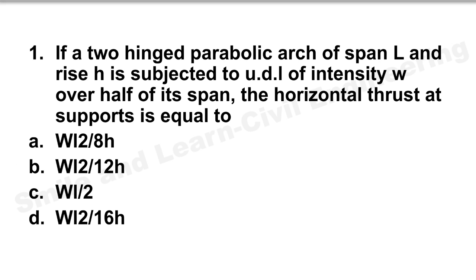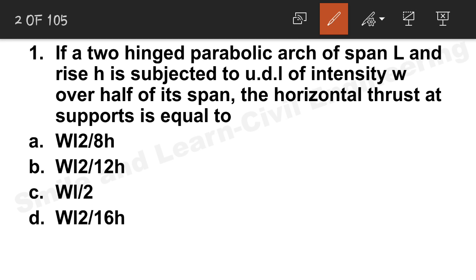Question 1: If a two-hinged parabolic arch of span L and rise H is subjected to UDL of intensity W over half of its span, the horizontal thrust at support is equal to? We discussed this type of question in the 2016 paper. Here some things are different — it is a two-hinged parabolic arch and the UDL is over half of its span. If the UDL is on the entire span, we know the standard answer. Since it's half the span, the correct answer will be WL² / 16H.